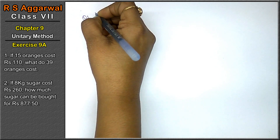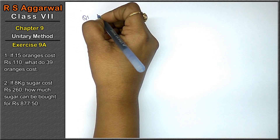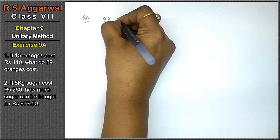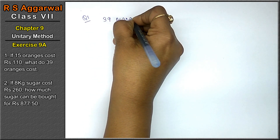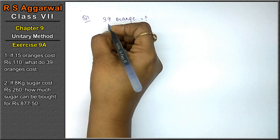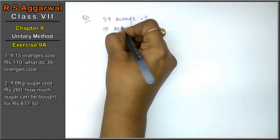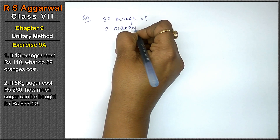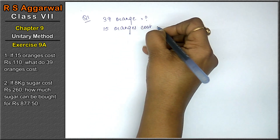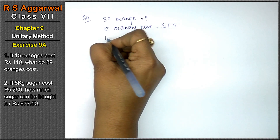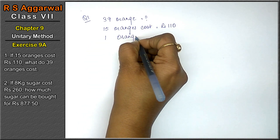Question number one: if 15 oranges cost rupees 110, what do 39 oranges cost? We have to find the cost of 39 oranges. From oranges, we will use the unitary method. Cost of 15 oranges equals rupees 110. Now, what is the cost of one orange? First we will find the cost of one orange.